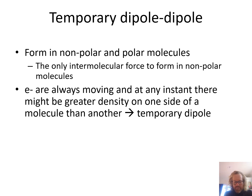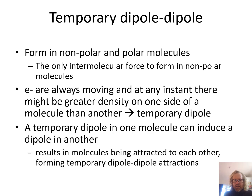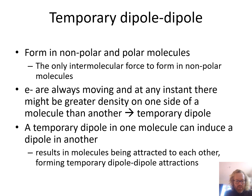Around every atom, and therefore every molecule, there are electrons. They can be arranged in different ways - in an even spread with no dipole, or in an uneven spread where you have more electrons on one side than the other, creating a temporary dipole. If a molecule with a temporary dipole is next to another molecule, it can induce a dipole in that molecule, resulting in an attraction.